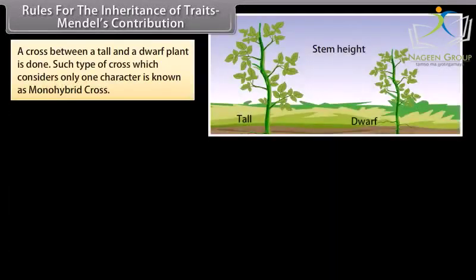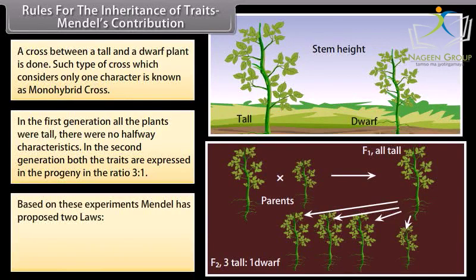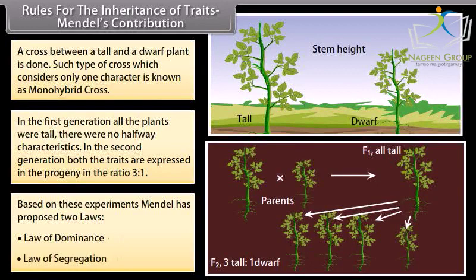A cross between a tall and a dwarf plant is done. Such a cross which considers only one character is known as a monohybrid cross. In the first generation, all the plants were tall, with no halfway characteristics. In the second generation, both the traits are expressed in a progeny in the ratio of 3:1. Based on these experiments, Mendel proposed two laws: the law of dominance and the law of segregation.